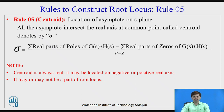Rule 5: Centroid — the location of asymptotes on the s-plane. All asymptotes intersect the real axis at a common point called the centroid, represented by sigma. The equation is: sigma = (summation of real parts of poles of G(s)H(s) minus summation of real parts of zeros of G(s)H(s)) divided by (P minus Z). Note: the centroid is always real; it may be on the negative or positive real axis and may or may not be part of the root locus.